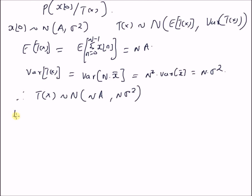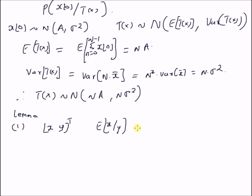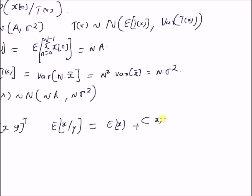Since both X(0) and T(x) follow Gaussian distributions, we can use the following lemma: for a Gaussian vector with two jointly Gaussian components x and y, the conditional expectation of x given y is given by the prior mean E[x] plus the ratio of the covariance of (x, y) to the variance of y, multiplied by the difference (y - E[y]). This expression gives the conditional expectation of x given y.